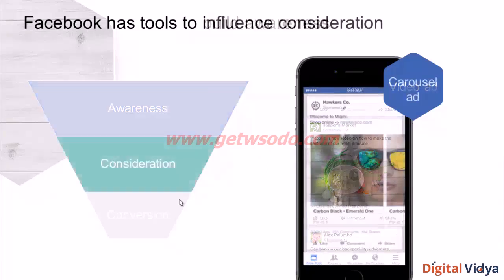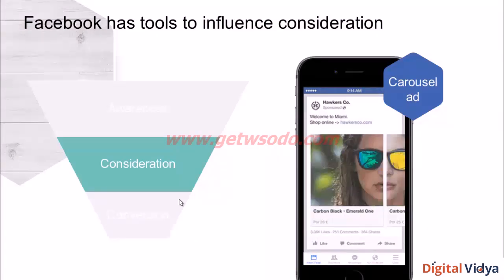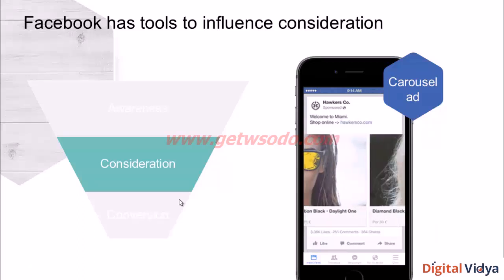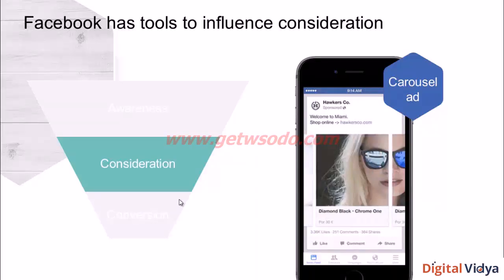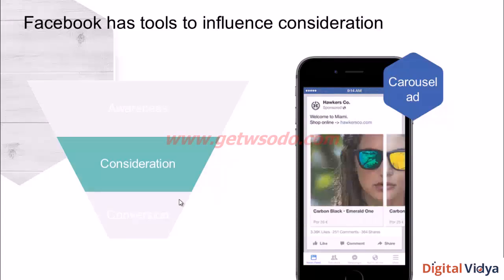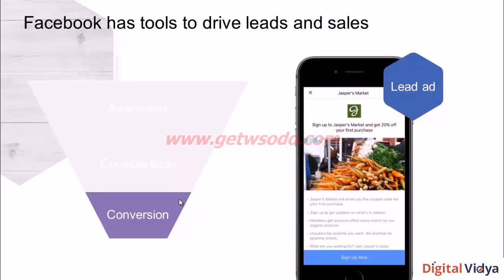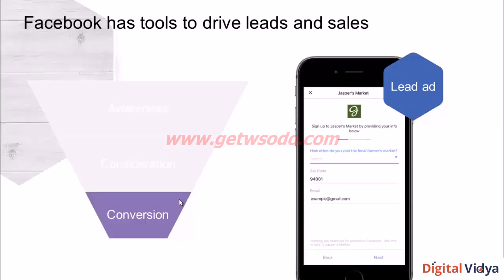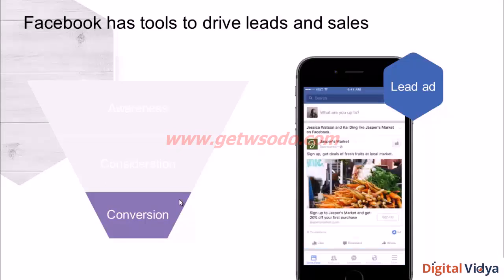At the consideration stage, you could use ads like carousel ads — which you'll learn about in detail in a later module — to influence consideration and drive interest in audiences already aware of your brand. There are other tools and formats as well; these are just examples you'll learn more about in later modules. At the conversion stage, you could use a lead ad — people click and it opens a form prefilled by Facebook with their name and number, which they can submit on Facebook. You as an advertiser can capture this lead. You'll learn much more about lead ads in detail in later modules.